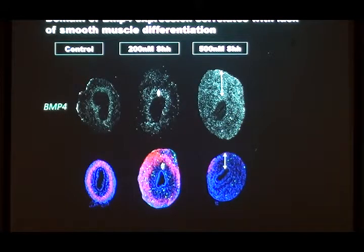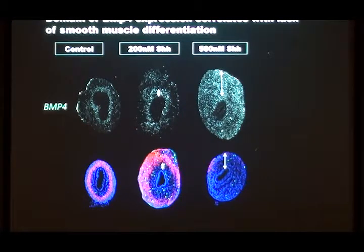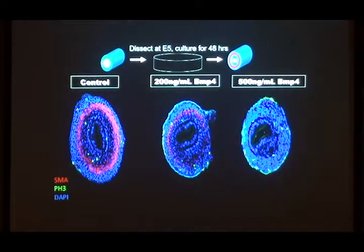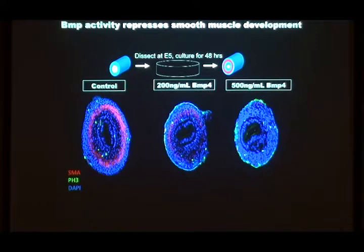BMP4 correlates very nicely with the domain where there's no smooth muscle. You can see there's no smooth muscle where BMP4 is expressed. If you add hedgehog and expand the domain of BMP4, you get more muscle out here but you've also expanded the region with no smooth muscle. And if you have BMP4 everywhere with enough hedgehog, you lose all smooth muscle. To confirm BMP4 is directly responsible, you can just add BMP4 directly — and as you add more and more BMP4, you lose the expression of smooth muscle actin.